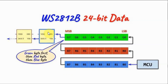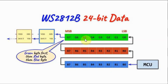To program the WS2812B, the microcontroller has to send a 24-bit data made of three bytes. The most significant byte represents the brightness level of color green. The second byte represents the brightness level of red, and the third least significant byte represents the brightness level of blue.